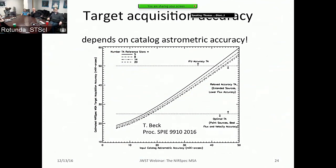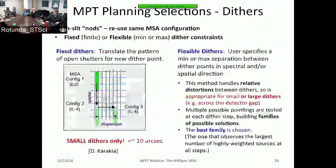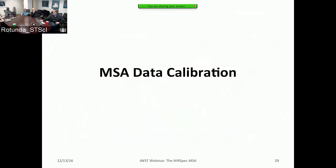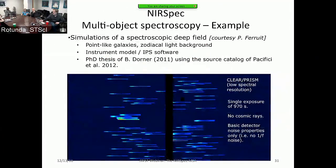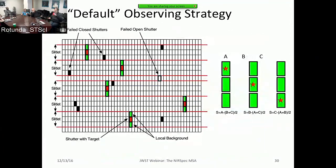A follow-up question clarifies the three-shutter A-B-C background subtraction algebra. In the three-exposure nod, B and C are the same slit taken twice without the source — you don't mix the top, middle, and bottom slits. You simply repeat the background measurements so the source spectrum in position A can be cleanly subtracted using a matched background.